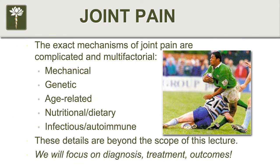Then there's the nebulous infectious or autoimmune factors, which is an area with a lot of active research. There are theories looking at viral activation of certain arthritic and joint problems. You also have a whole host of autoimmune problems — rheumatoid arthritis, psoriatic arthritis, lupus — conditions where your own immune system attacks your own joint lining or cartilage.